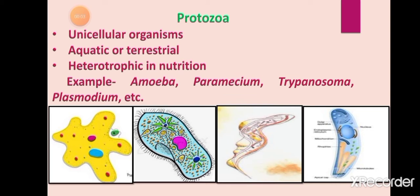The next group of microorganisms is protozoa — protozoans is the singular. The word is made up of 'proto' (most primitive) and 'zoa' (animals), meaning these are the most primitive, single-celled, and microscopic animals. They are aquatic or terrestrial and are heterotrophic in nature — they cannot make their own food and depend on others.